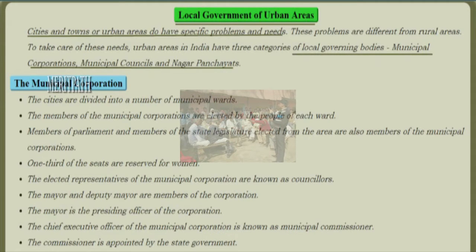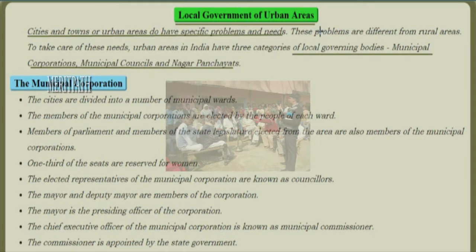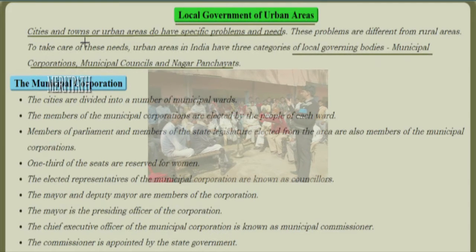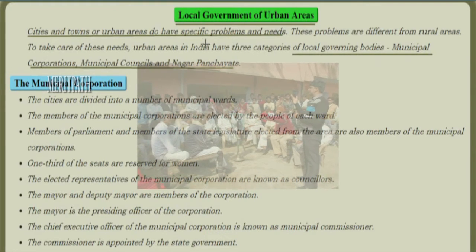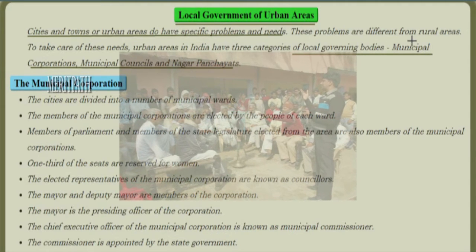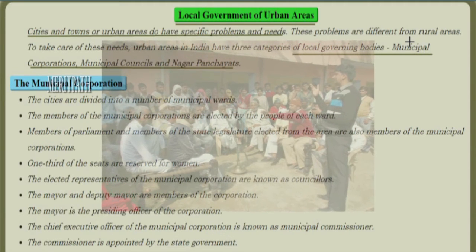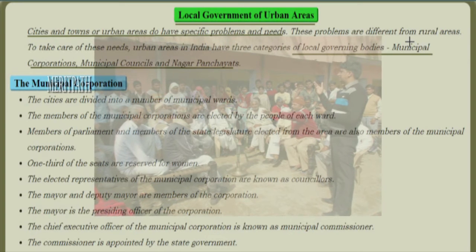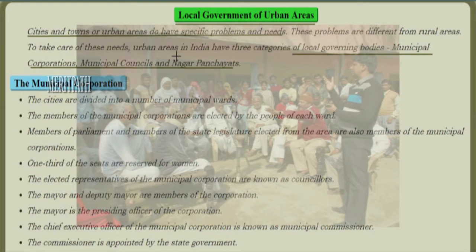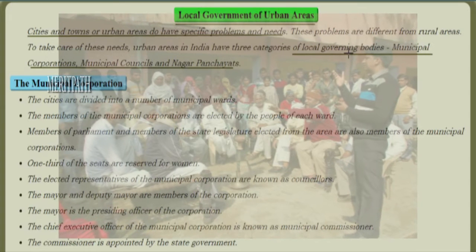Let's study a new chapter on local government of urban areas. Cities and towns, or urban areas, do not have specific problems and needs similar to rural areas — their problems are different. To take care of these needs, urban areas in India have three categories of local governing bodies: municipal corporations, municipal councils, and Nagar Panchayats.